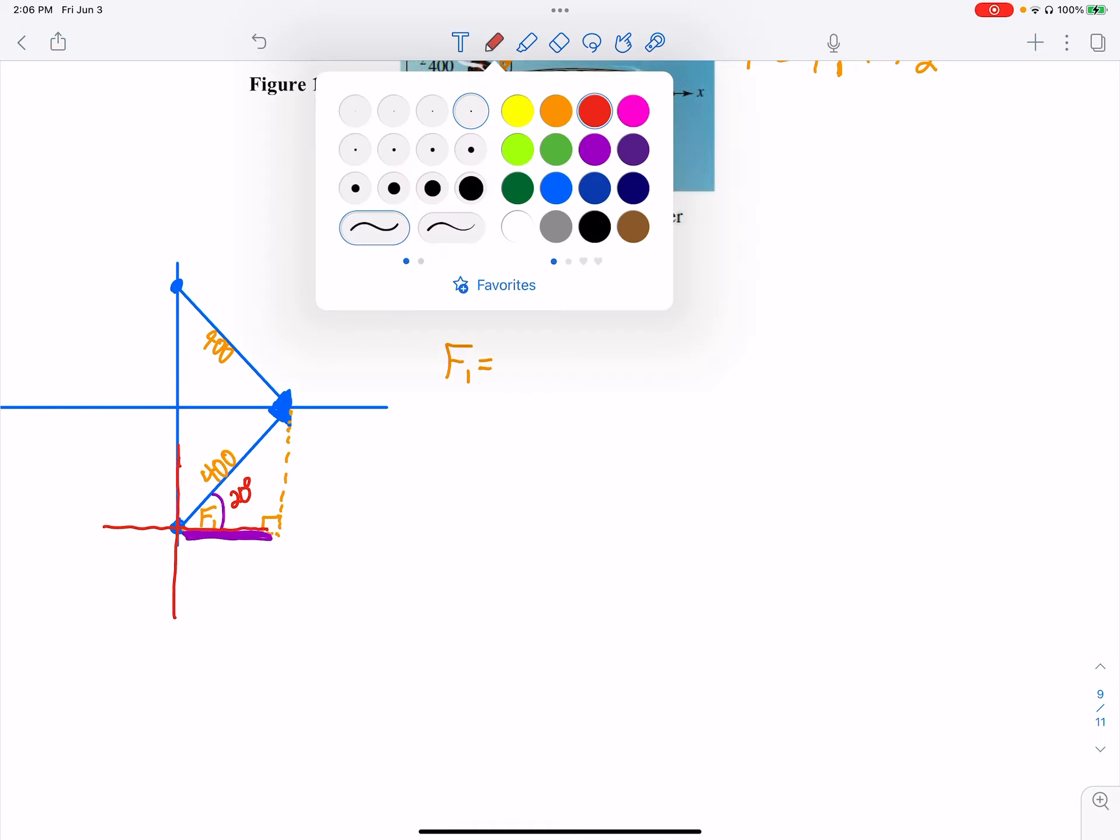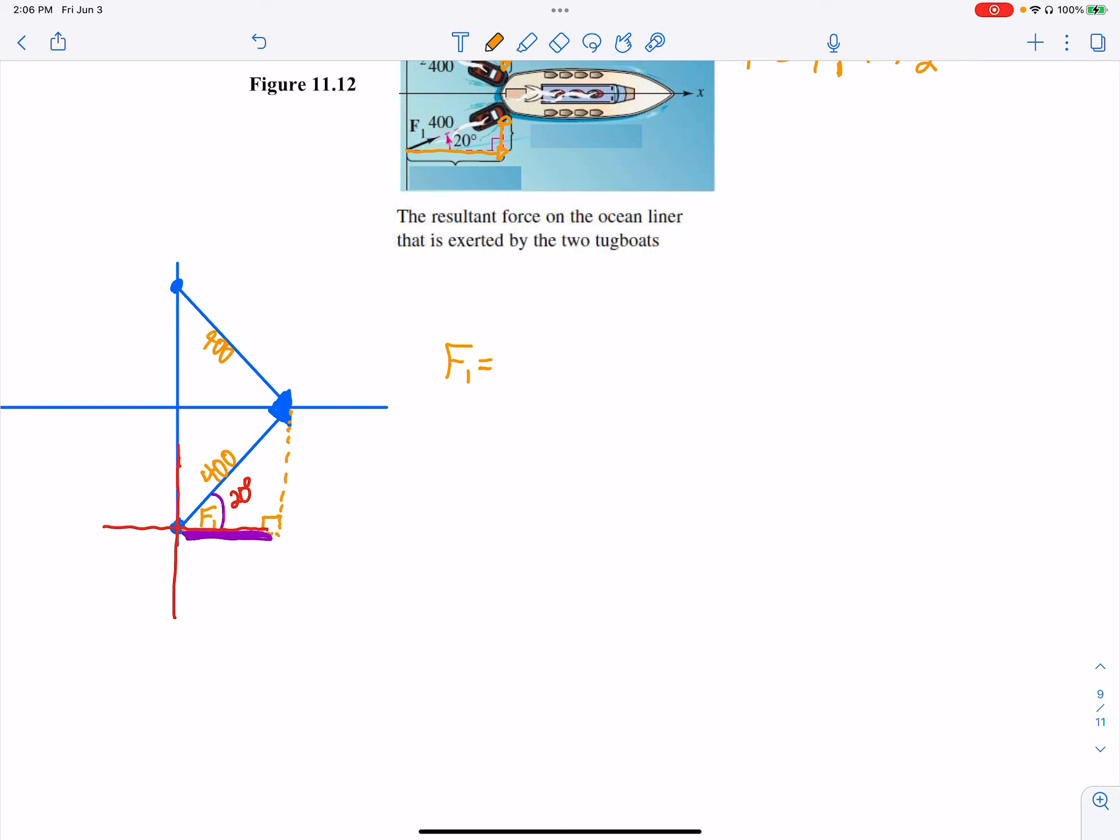So if I'm wanting to find the X component of this, I would take, let's call it X1. I would take cosine of 20 degrees. That is X1 over 400, which tells me X1 is equal to 400 cosine 20 degrees. I'm just going to write that the way it is right now. 400 cosine 20 degrees I. That is my I component.